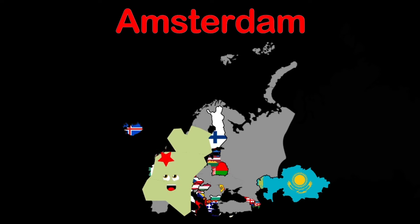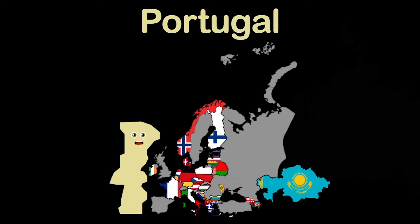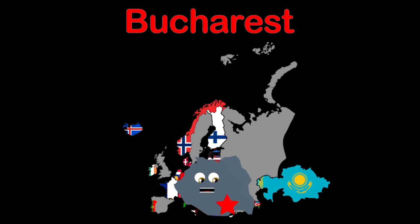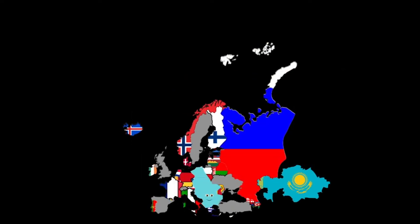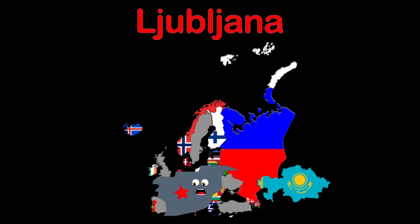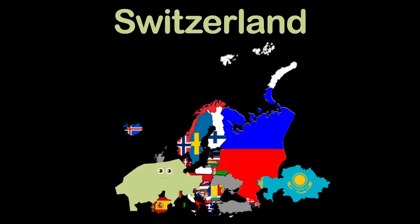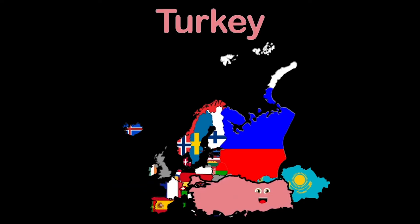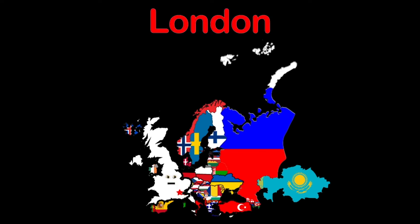Norway — capital Oslo. Poland — capital Warsaw. Portugal — capital Lisbon. Romania — capital Bucharest. Russia is in Europe and Asia — capital Moscow. San Marino — capital San Marino. Serbia — capital Belgrade. Slovakia — capital Bratislava. Slovenia — capital Ljubljana. Spain — capital Madrid. Sweden — capital Stockholm. Switzerland — capital Bern. Turkey is in Europe and Asia — capital Ankara. Ukraine — capital Kyiv. United Kingdom — capital London. Vatican City, or Holy See — capital Vatican City.